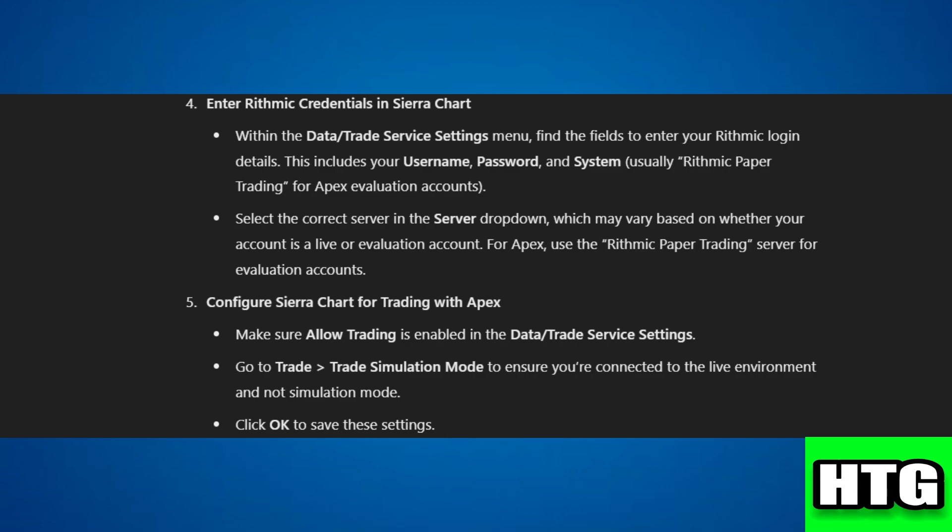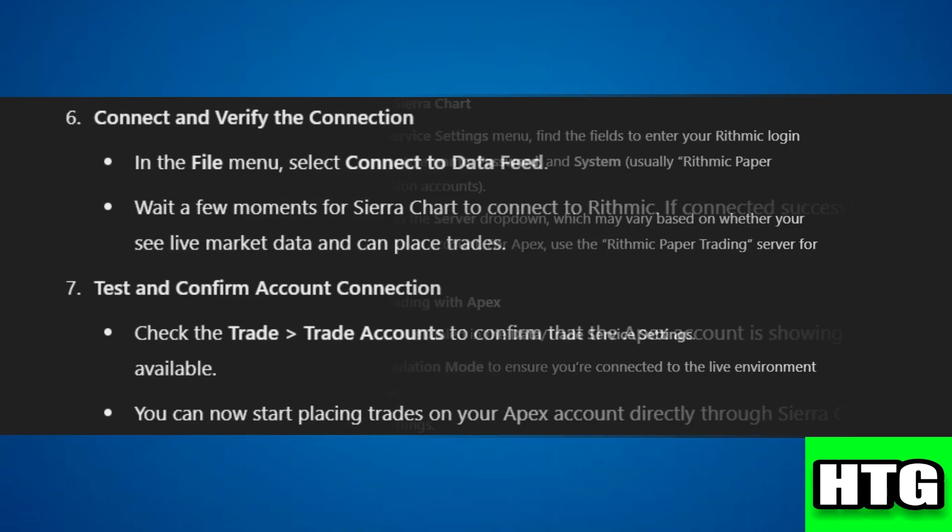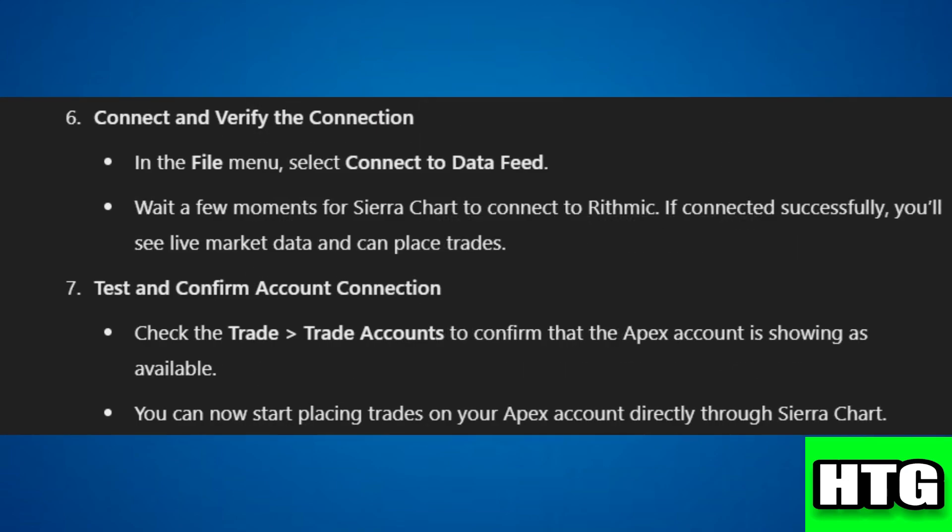Step five: configure Sierra Chart for trading with Apex. Ensure Allowed Trading is enabled, and go to Trade and then Trade Simulation Mode to connect to the live environment. Step six: connect and verify the connection. In the File menu, select Connect to Data Feed and wait for Sierra Chart to connect to Rithmic.